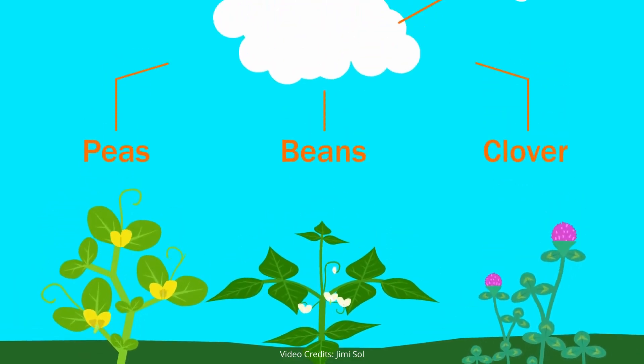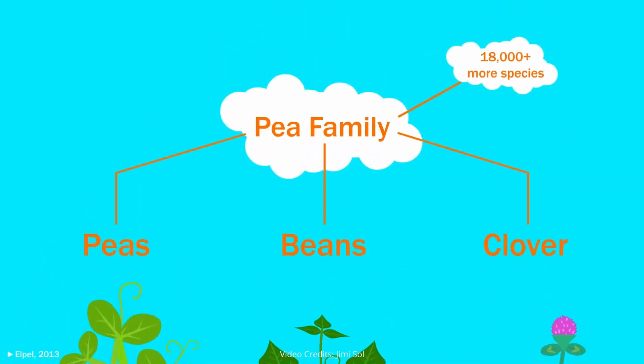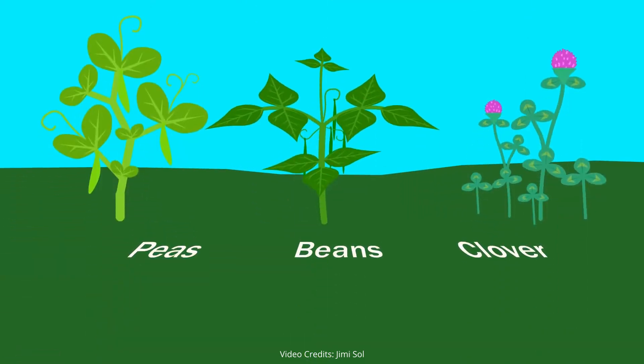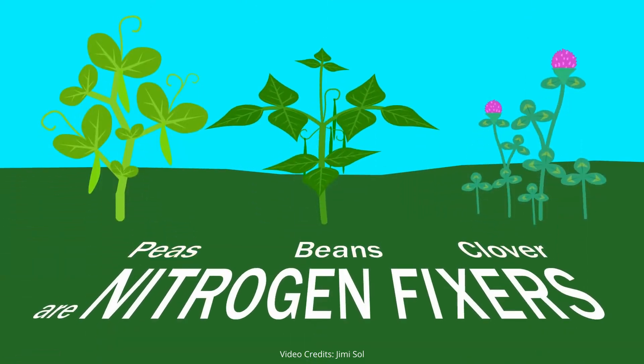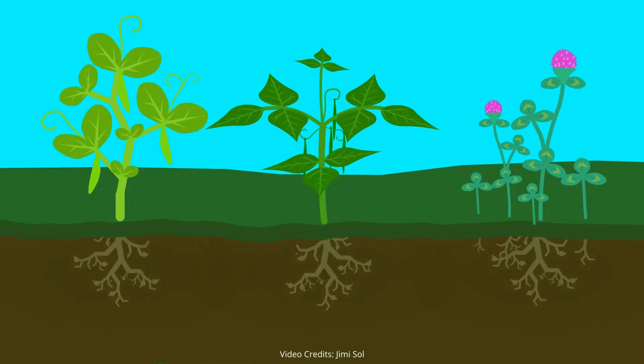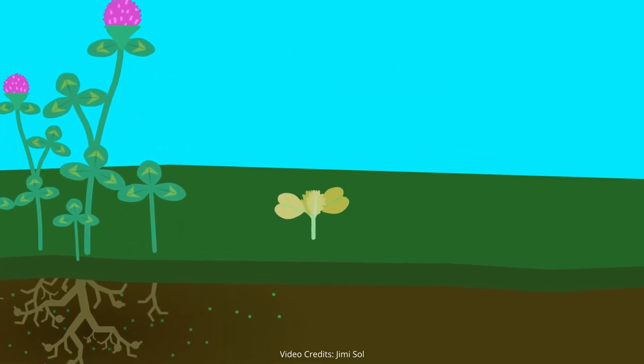Peas, beans, and clover are among the 18,000 species in the pea family. Most species in this family, including these three, are known as nitrogen fixers. They increase the level of nitrogen in the soil, which plants need to produce protein so they can grow, and chlorophyll so they can photosynthesize.